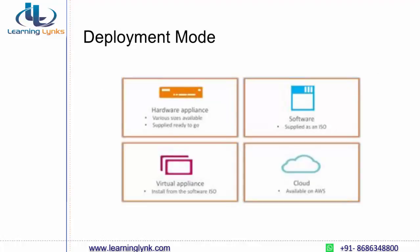Coming to the deployment aspect, how you can deploy your particular firewall: the first option is you can directly purchase a hardware appliance with a license, put up the cable, set up your entire network, and start running it. Another option is to set up a software-based UTM product — you can install it using any virtualization technique, like a virtual machine, ESXi, or a hypervisor, and start practicing or controlling your entire network.